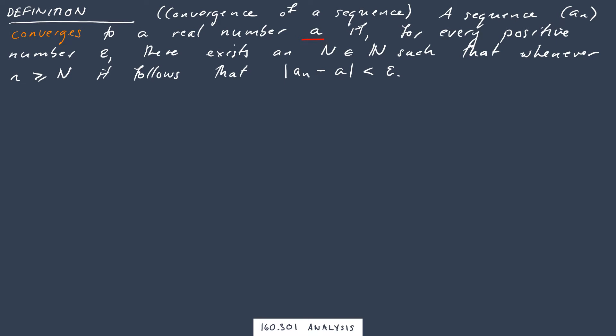converges to a real number a. The definition includes the number that it converges to. If for every positive number epsilon there exists a natural number capital N such that whenever you go past this natural number, whenever little n is greater than or equal to capital N, it follows that |a_n - a|, your sequence value minus the number you're hoping it converges to, is less than epsilon.